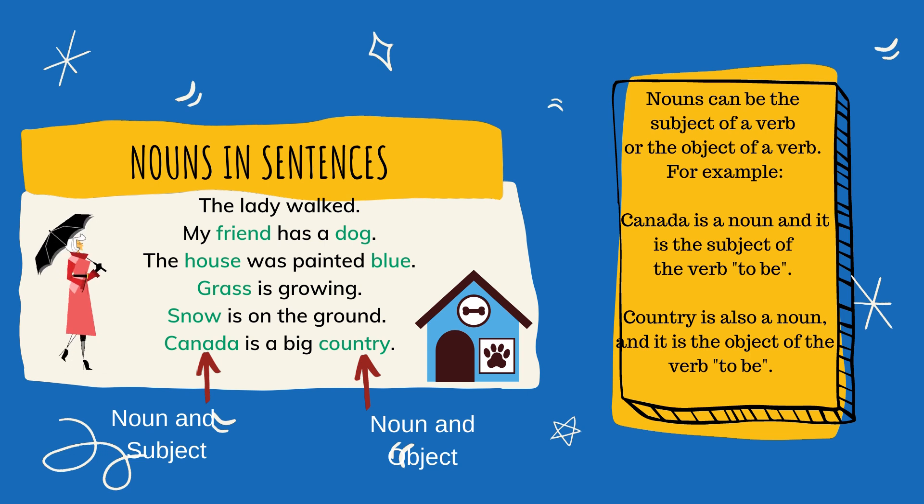For example, Canada is a noun and it is the subject of the verb to be. To be is in the form of the word 'is'. Country is also a noun, but it's the object of the verb to be. And it answers the question: what? Canada is what? Canada is a country.